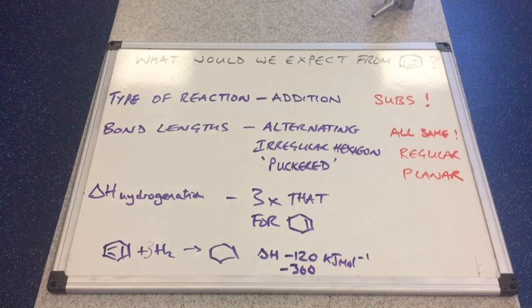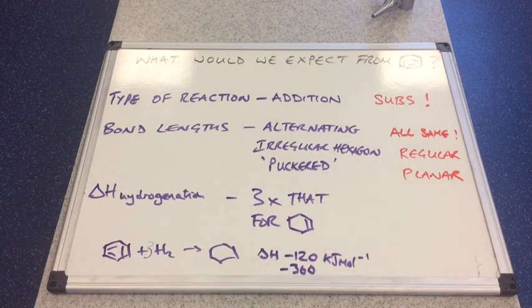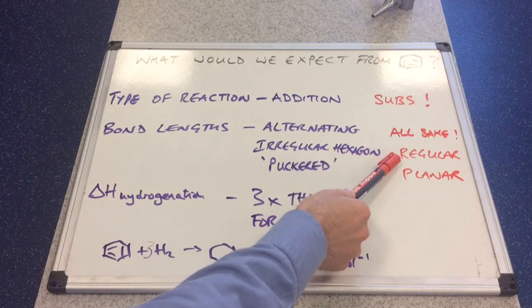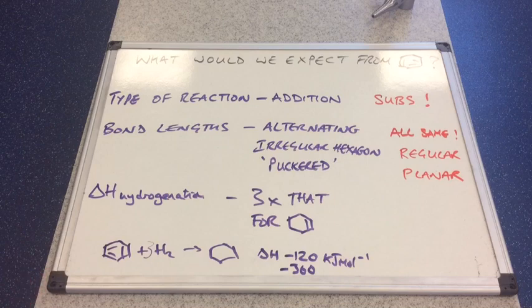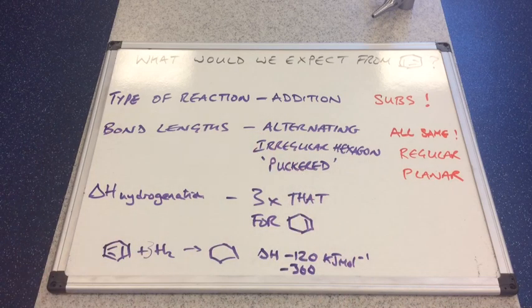In terms of bond length and shape, scientists have found out through things like x-ray crystallography that the bond lengths are all the same. They are intermediate between carbon-carbon double and carbon-carbon single bonds. Because all the bonds are actually the same, that makes the hexagon regular. And because it's a regular hexagon it actually has a planar shape, it's flat, it's not distorted or crooked.